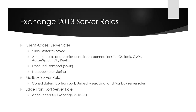The Client Access Server role is constantly referred to by Microsoft as a thin stateless proxy, and that is a very good way of thinking of it. It authenticates and proxies or redirects connections for different client access protocols — Outlook connections, OWA, ActiveSync, POP, and IMAP. It also hosts a front-end transport service for SMTP connections, primarily for accepting incoming SMTP traffic from the internet or from an external smart host.